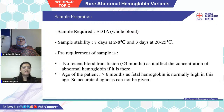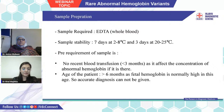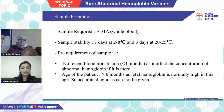For HPLC testing, sample preparation requires an EDTA whole blood sample received in a purple vacuum container. Sample stability is 7 days at 2–8°C and 3 days at 20–25°C. Pre-requirements: the patient should not have had a blood transfusion in the last 3 months — that is the most mandatory condition — as it will affect the concentration of abnormal hemoglobin. The patient's age should also be more than 6 months, since fetal hemoglobin is normally high before that age and accurate diagnosis cannot be given.